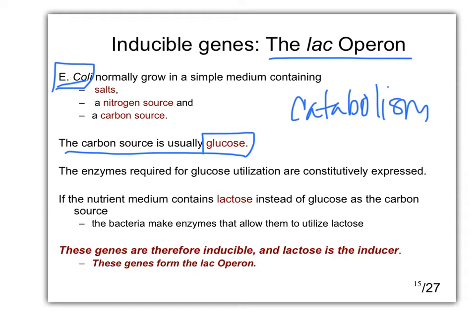The enzymes required to use glucose are constitutive because you almost always need them — there'd be no reason to turn those off. But if bacteria are in a situation with no glucose and instead have the sugar lactose — the sugar in milk or dairy products — they need to turn on the genes to metabolize lactose. Those genes are normally off. They are therefore inducible, and the sugar itself is the inducer that switches on the next set of events.